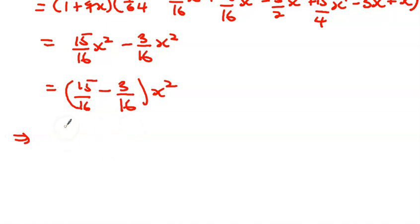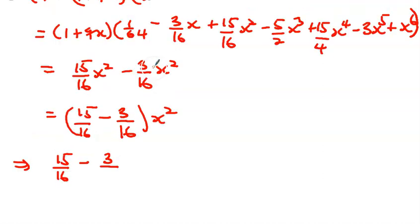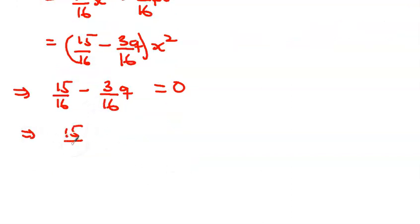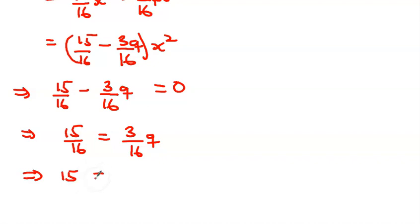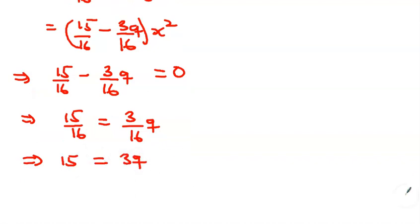So we have 15/16 minus 3q/16 equals zero. This gives 15/16 equals 3q/16. Cross-multiplying, the 16s cancel, so 15 equals 3q. Dividing both sides by 3: q equals 5. Therefore k equals 5.